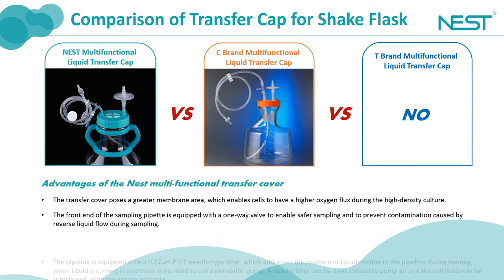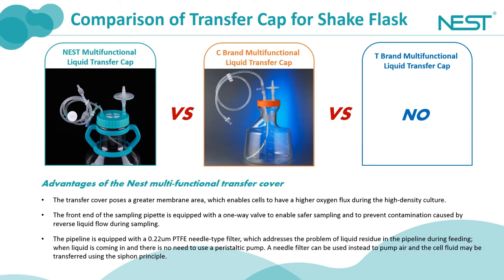Let's summarize the comparisons between the Nest Multifunctional Transfer Cap and other competitors. Brand T also offers two-way liquid transfer caps and inverted liquid transfer caps, but doesn't have multifunctional transfer caps. The membrane area of the Nest product is much larger than that of the Brand C product, enabling denser cell culture. The Nest product is equipped with a one-way valve for sampling, while Brand C only has a sampling tip instead of a sampling valve. Our multifunctional transfer cover has a PTFE needle filter, while Brand C's product doesn't.